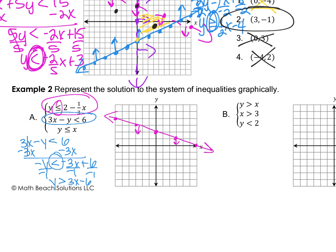The slope is 3/1 and the y-intercept is -6, so it crosses the y-axis at -6 and I go up 3 right 1. Since it just says greater than without equal, it's a dotted line — it does not include points on the line. Since y is greater than, pick a point and draw an arrow above.